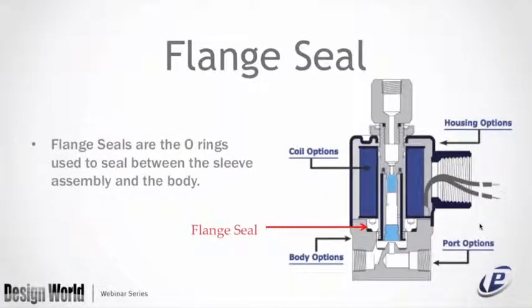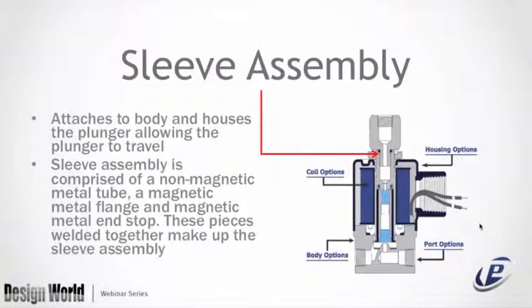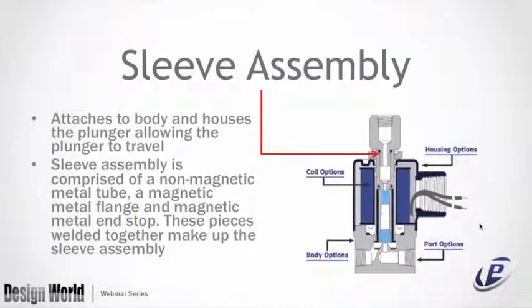The flange seals are the O-rings used to seal between the sleeve assembly and the body, allowing for no external leakage. The sleeve assembly attaches to the body and houses the plunger, allowing the plunger to travel. The sleeve assembly is comprised of a non-magnetic tube, a magnetic metal flange, and magnetic metal endstop — these pieces welded together make up the sleeve assembly.